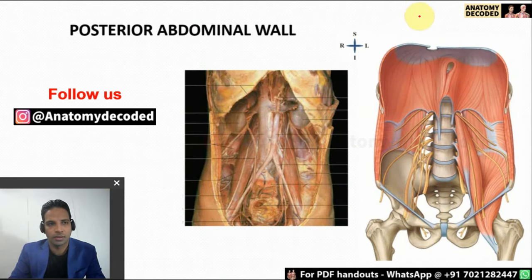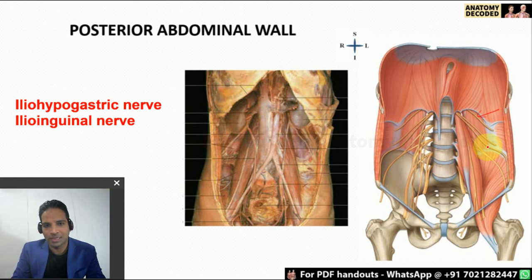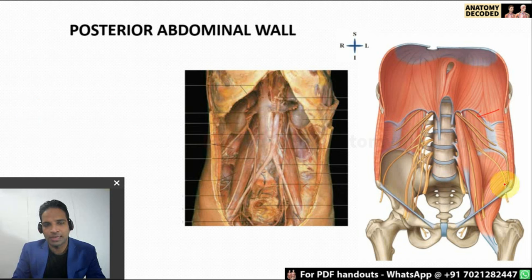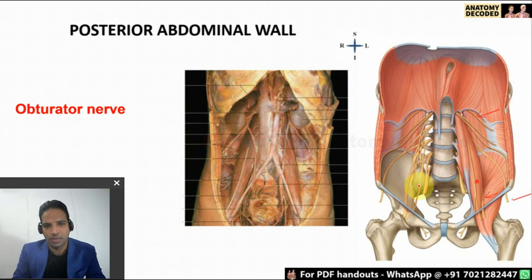Now let's start with the posterior abdominal wall. The three muscles seen here — psoas major, quadratus lumborum, and transversus abdominis — are the same ones in the posterior relations of the kidney. Various nerves of the lumbar plexus are also seen, from above downwards: subcostal nerve and vessels, then iliohypogastric nerve, ilioinguinal nerve, the lateral cutaneous nerve of the thigh going towards the anterior superior iliac spine, the femoral nerve, and just anterior to the psoas major is the genitofemoral nerve. Medial to it is the obturator nerve, and the lumbosacral trunk is seen on the medial aspect.